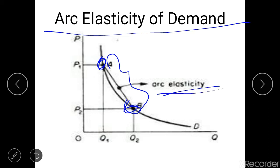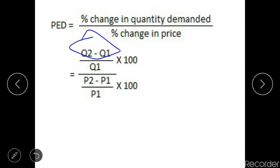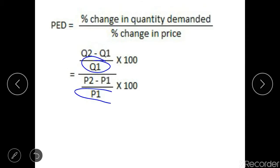The formula for calculating the elasticity by the arc elasticity method is very similar to the percentage method or the proportionate method of calculating the elasticity. The formula for the proportionate method was: percentage change in quantity demanded divided by the percentage change in price, written as the change in quantity divided by the original quantity, divided by the change in price divided by the original price. Now in the arc elasticity method, instead of using the original quantity or the original price as the base, we use the average quantity or the average price — the midpoint of the two quantities or the midpoint of the two prices.